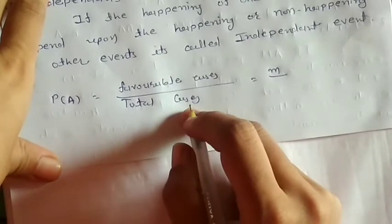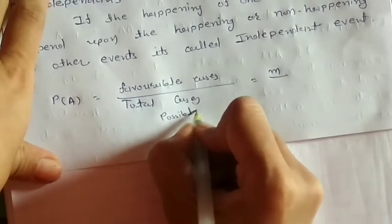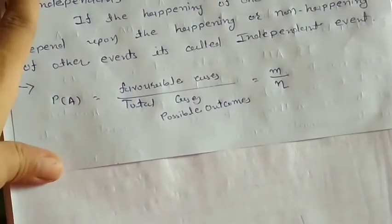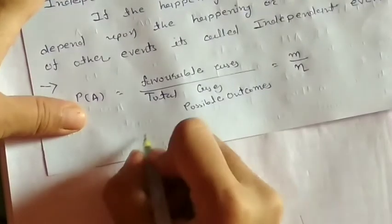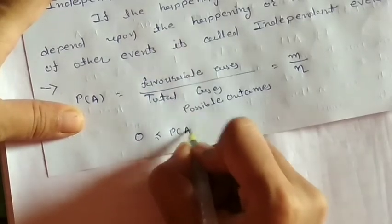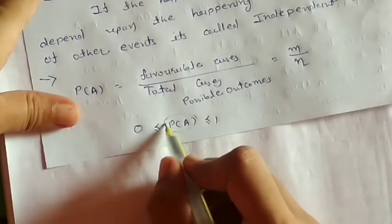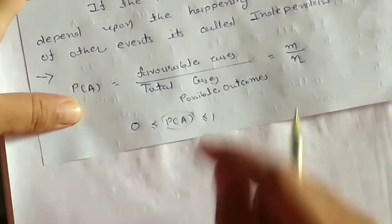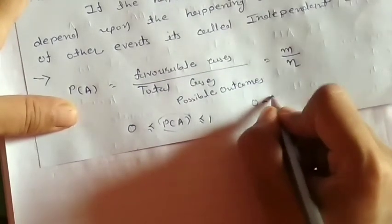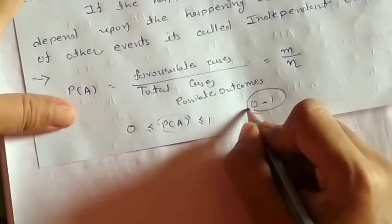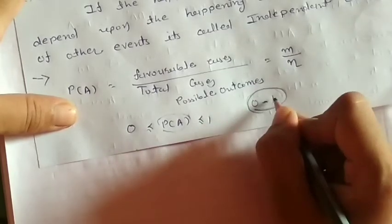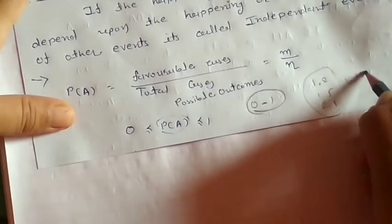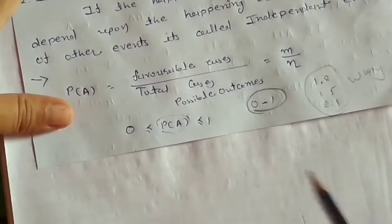Here, favorable cases = M, and total cases (meaning total possible outcomes) = N. So P(A) = M/N. Also, 0 ≤ P(A) ≤ 1, meaning the value of P(A) is always between 0 and 1. Values like 2/1 would be wrong. So probability is always 0 to 1.